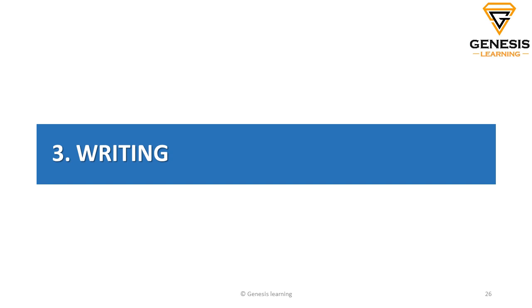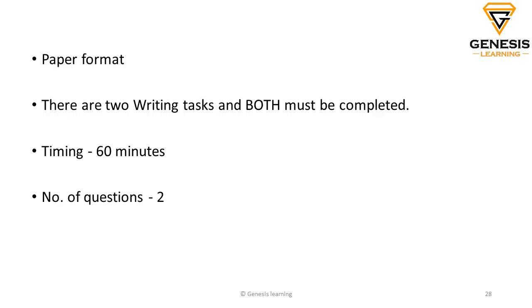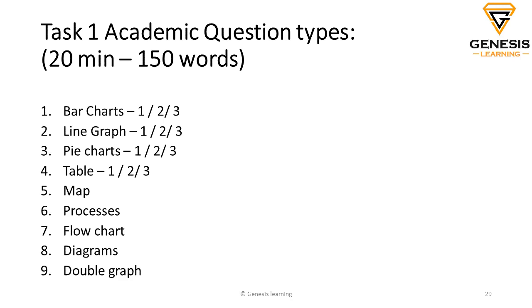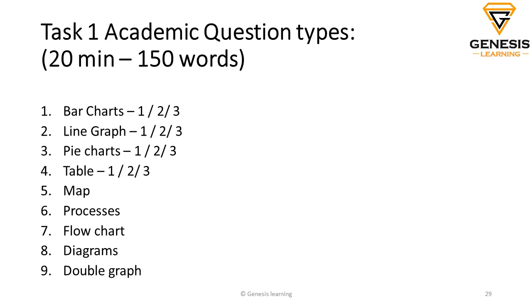The next module is your writing. As soon as you finish your listening and reading, you move on to writing. Here also, you have to manage your own time. There are two sections, or tasks. Task one — you should spend around 20 minutes and write around 150 words. For the general exam, it is going to be a letter — formal or informal. For the academic one, it can be a pie chart, bar chart, line chart, a map, process, flow chart, or other visuals. There are different varieties of question types for the academic task one.